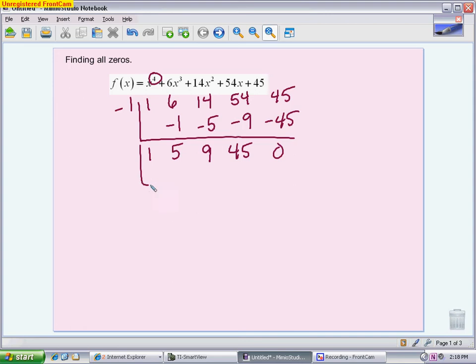I'm going to go one step further and do synthetic again with negative 5. If you want, you could stop and try to factor this a little bit, but I know negative 5 looks like a pretty good 0. So I'm going to drop down, multiply, add, multiply, add, multiply, add. And again, I know I was successful because I got a 0 remainder.